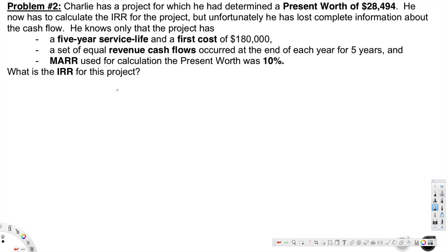Now let's see how to find that. They have mentioned a five-year service life and a first cost of $180,000. Based on this, we are going to create an equation: 28,494 (the present worth) is equivalent to negative 180,000 (the first cost).